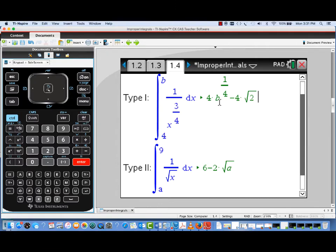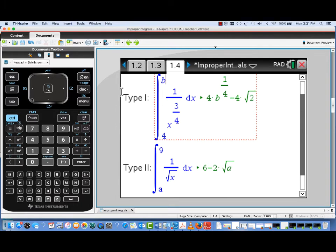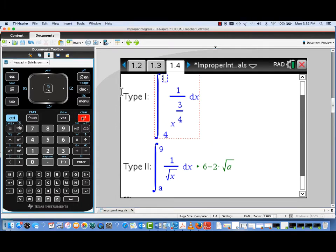Integrate from 4 to b, and now we see a term show up in terms of b. It's 4b to the 1 fourth, and as b gets larger and larger, that term will get larger and larger. That means that the limit of this expression should approach infinity.